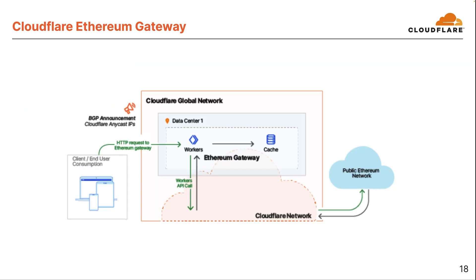Quick view of how the Ethereum gateway works. Via Cloudflare's global Anycast network, an incoming JSON RPC API call over HTTP is sent to the closest data center to the user. An app on the Workers serverless platform receives the request, and if it's a read operation, checks the local cache and returns the result if found. If content is not cached, Workers will make an API call to Ethereum nodes on the Cloudflare network to retrieve the data and return it to Workers and the client respectively. If Workers receives a write operation, Workers will make an API call to Ethereum nodes on the Cloudflare network. Ethereum nodes on the Cloudflare network are also peering with the public Ethereum network and can access it as needed.